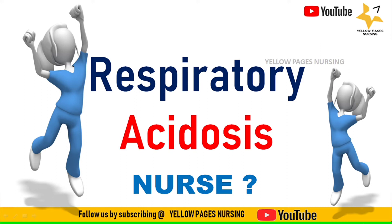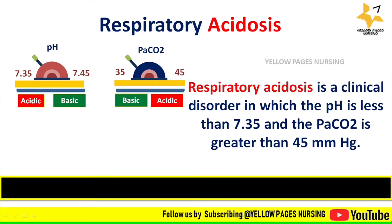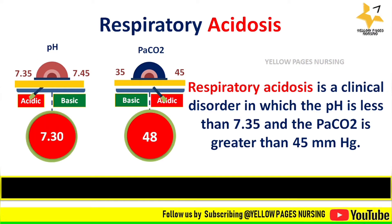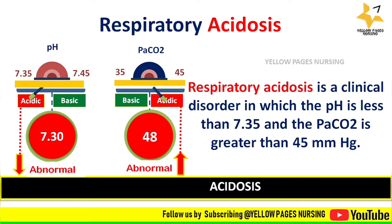What is respiratory acidosis? It is a clinical disorder in which the hydrogen ion concentration, that is pH, is less than 7.35, and the partial pressure of carbon dioxide, that is PaCO2, is greater than 45 mmHg. Bicarbonate is slightly elevated or maybe normal. For example, a pH level of 7.30 is below the normal range of 7.35 to 7.45.